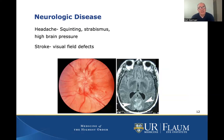A rare neurological disease in kids can be stroke, which can cause visual field or peripheral visual field defects. They might not be able to see one side or the other because they've had a stroke.